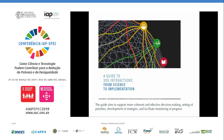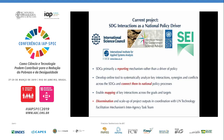Another publication is on SDG interactions. The sustainable development goals represent a particular way of packaging goals — they could have been organized differently, and they are most definitely not independent of each other. There are strong interactions, potential synergies, and potential trade-offs, which we need to understand if we are to engage in addressing these goals effectively and without unintended consequences. This publication represented a start, by taking a few goals and examining their interactions very carefully.